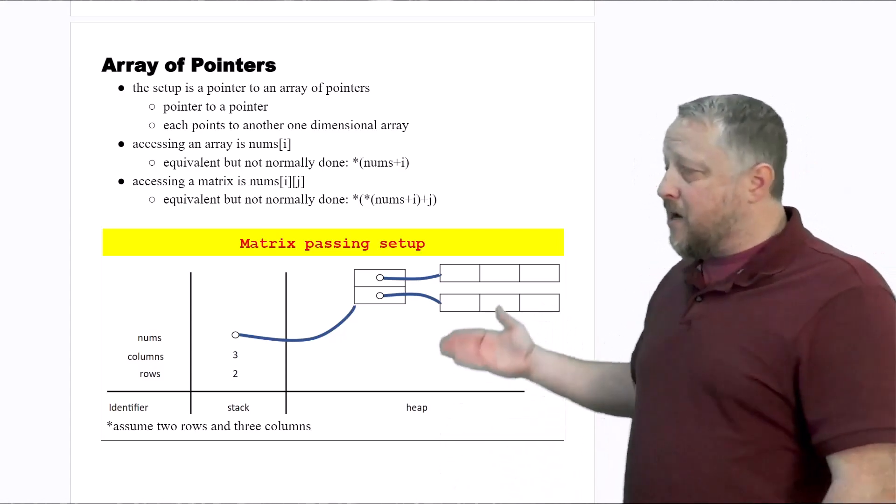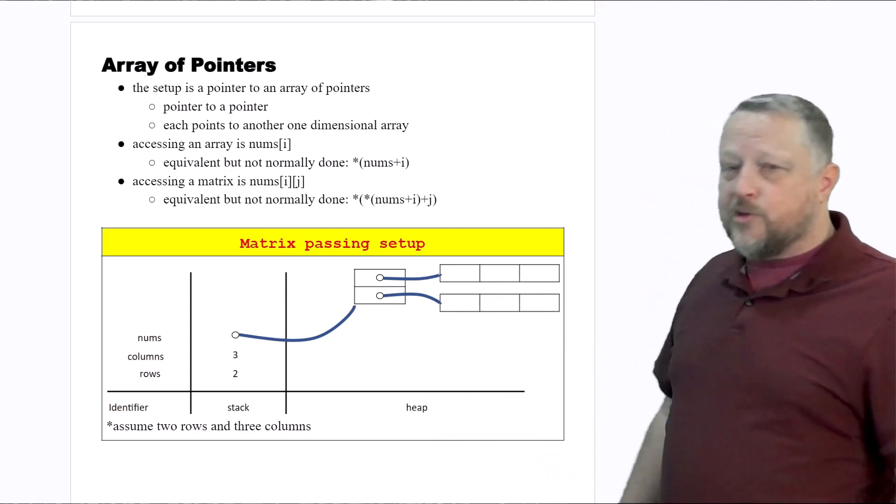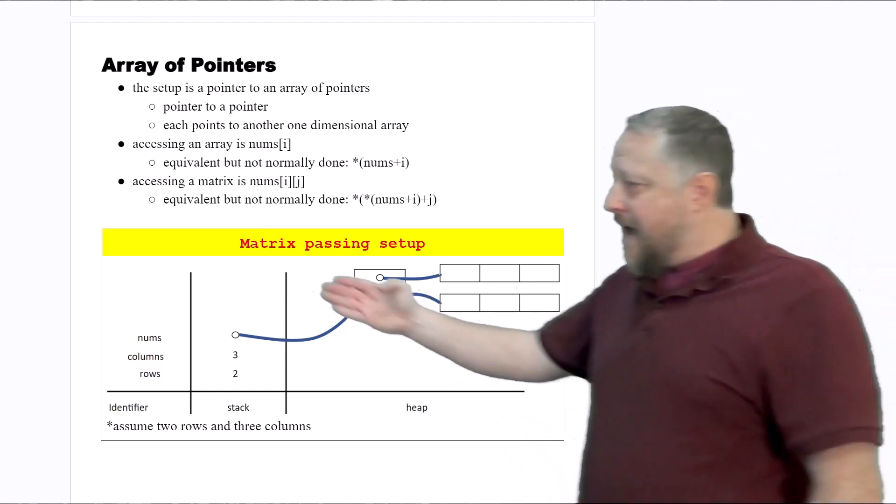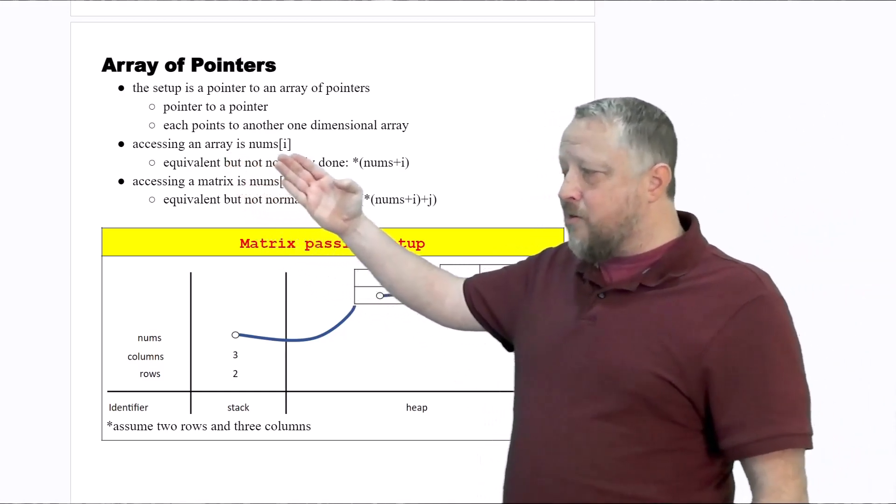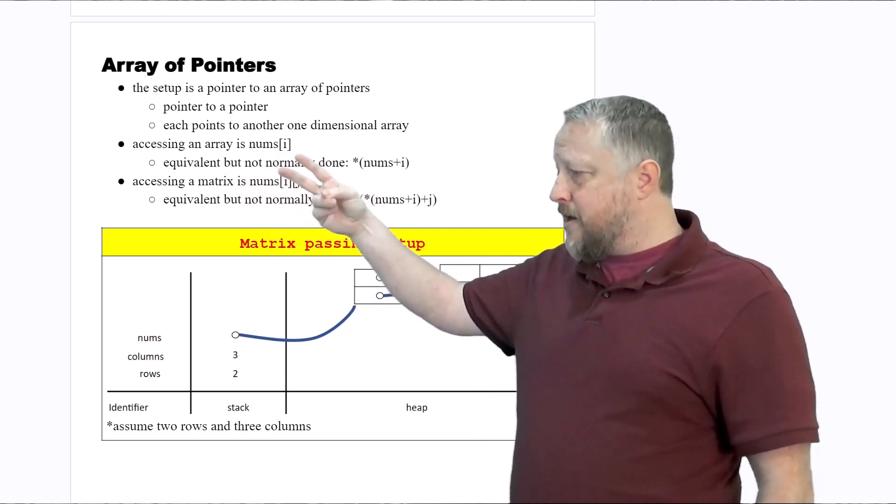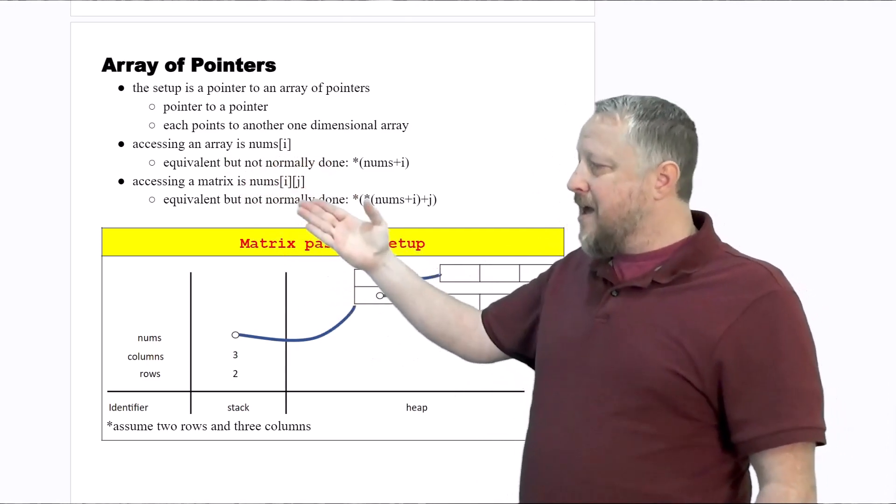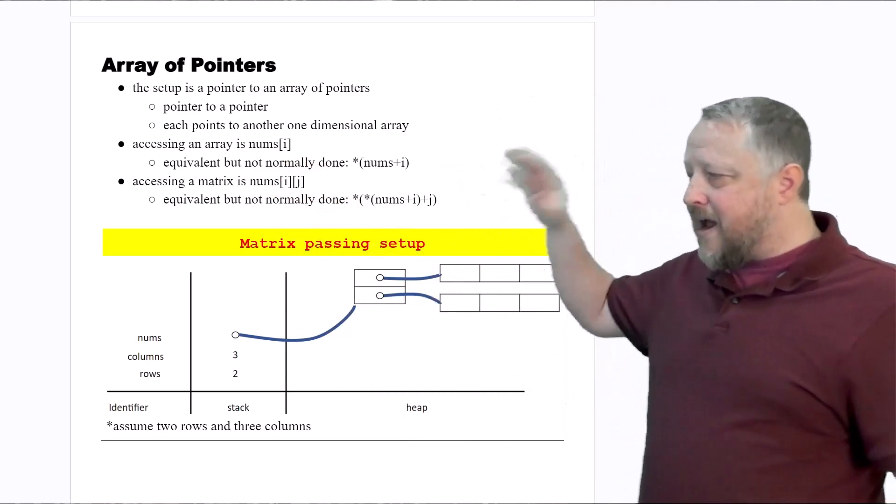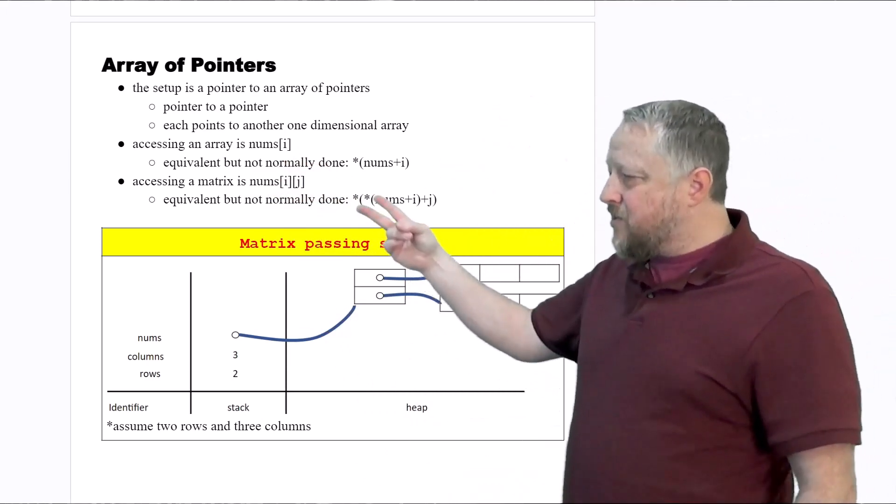It is a lot more pointers when it comes to using dynamic arrays. Now accessing an array is still using a single index number or element index number with square braces. Accessing the matrix is still done, but behind the scenes, again, I could use a single...